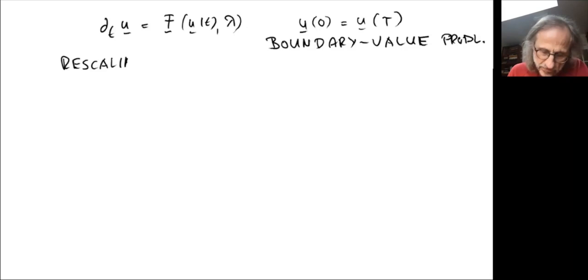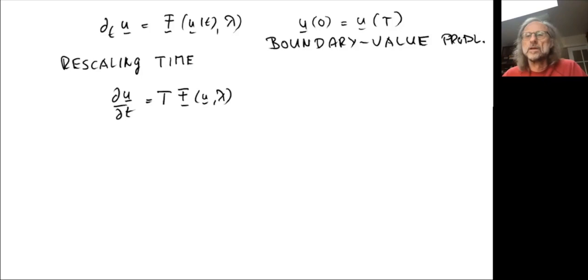And so then the differential equation after rescaling the time - I'm not going to introduce a different variable for that, we'll just stick with t again. So rescaling time, we get then the equation that du/dt is equal to T times f of u and lambda.